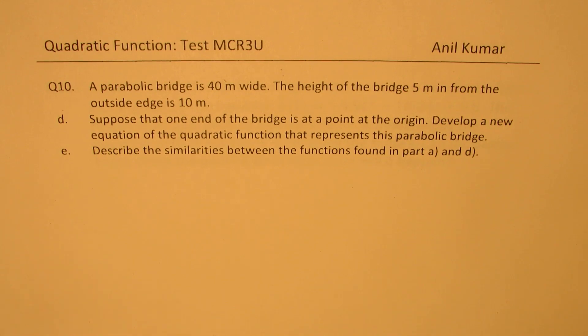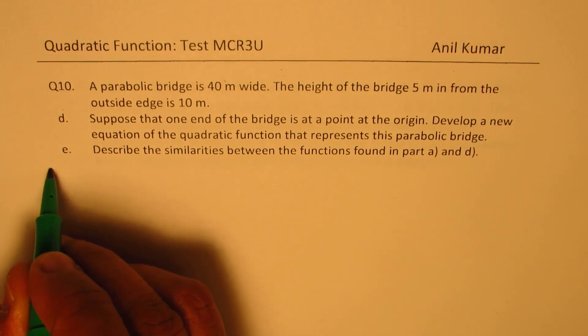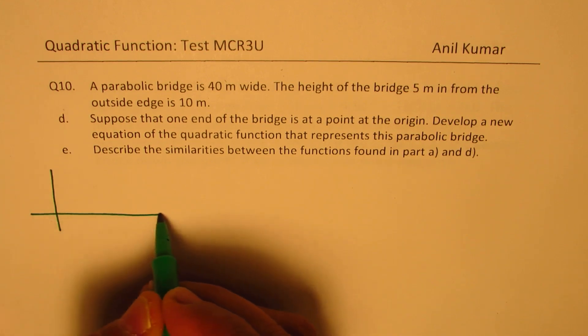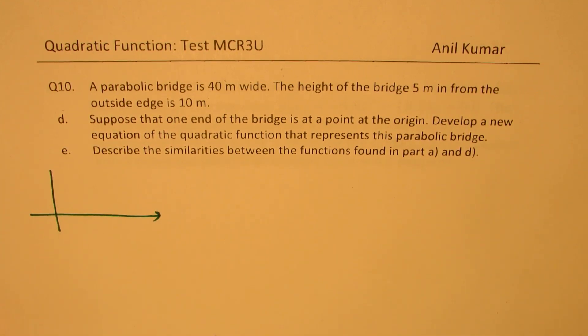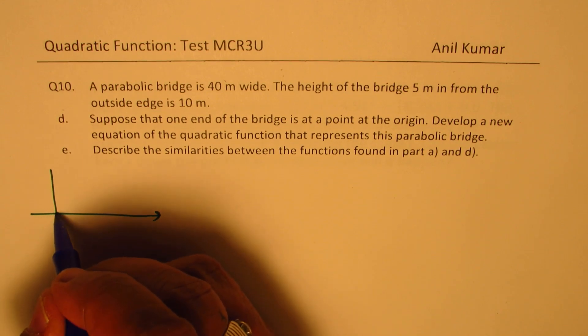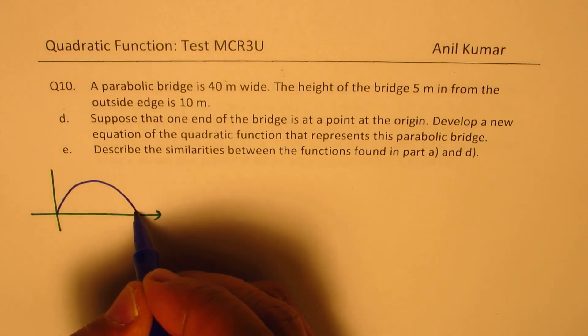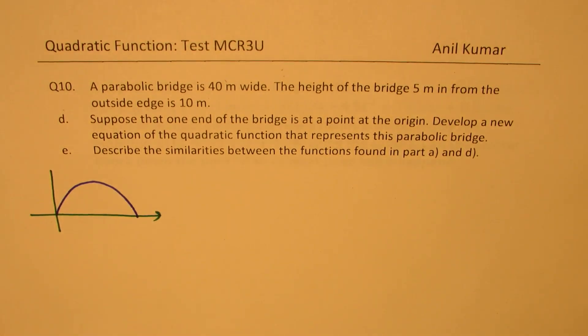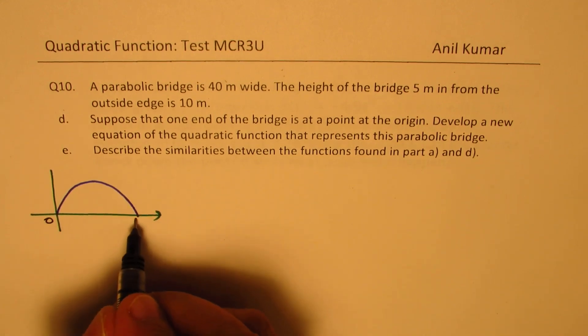So the situation has slightly changed. What we have now is the bridge. We are taking x's and one of the starting point is the origin itself. So the bridge is kind of like this now, right? So that is the situation.